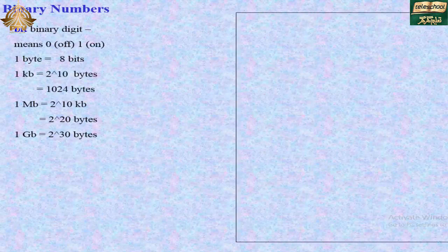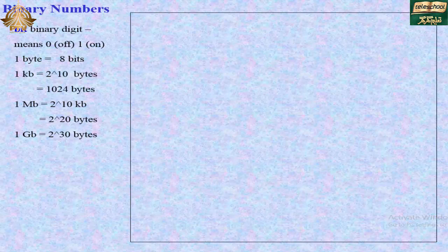Binary numbers. A bit of binary data is either zero or one — zero means off and one means on. One byte is equal to eight bits. One kilobyte (KB) equals 2 to the power of 10 bytes, which is 1024 bytes. One megabyte (MB) equals 2 to the power of 20 bytes. One gigabyte (GB) equals 2 to the power of 30 bytes.